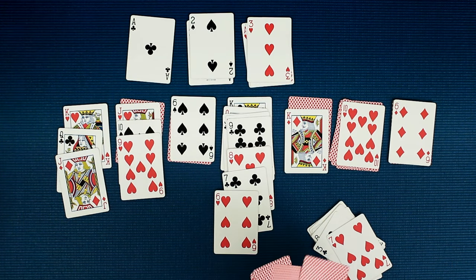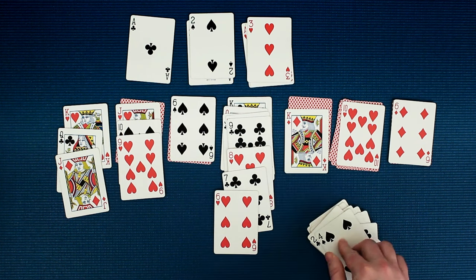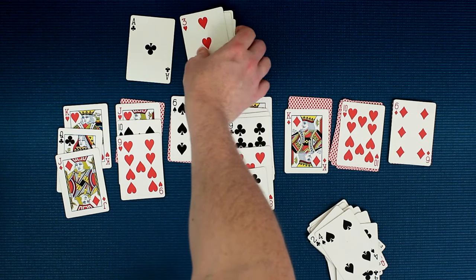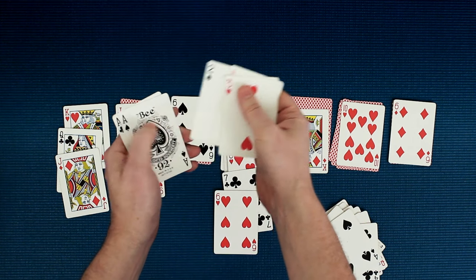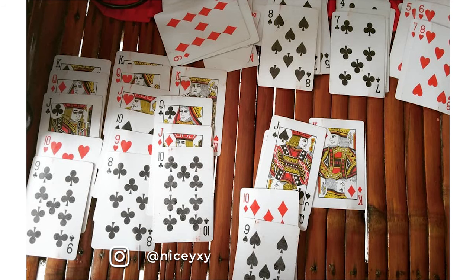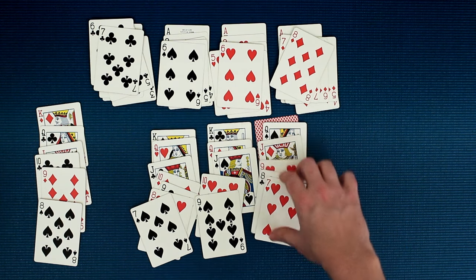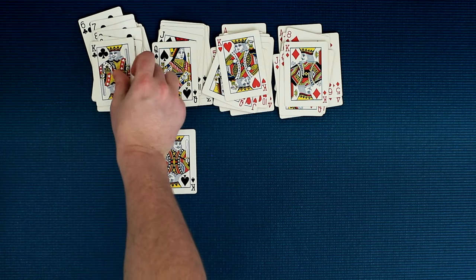Now, most of the time, you're going to reach a point where you can't make any more moves. There's nothing left to move around, and you've passed through the draw deck a few times. That's the end of the game. You count how many cards you're able to put up top in the foundation piles, and that's your score. But once in a while, with good strategy and also a bunch of luck, you get all the cards moved up top.